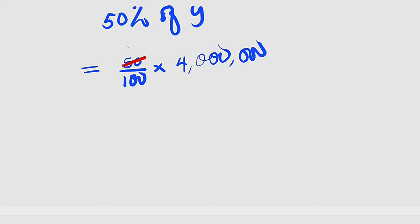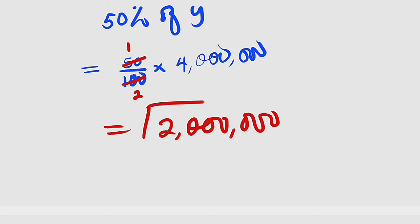50 can divide itself once and it can divide 100 two times, so it's just like having half of this which is 2 million. So this is exactly 2 million and this is our answer. Let me show you the second alternative.